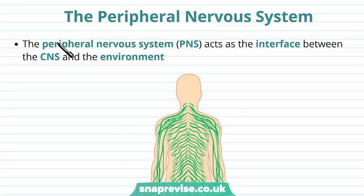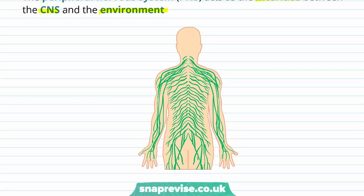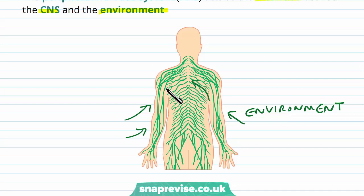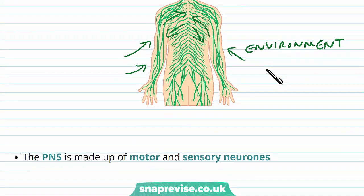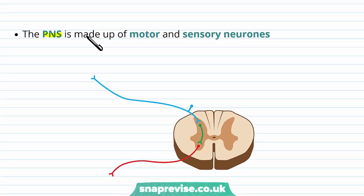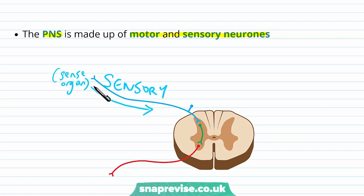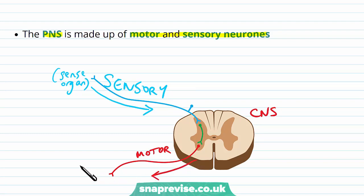The peripheral nervous system is slightly different. The PNS acts as the interface between the CNS and the environment. The CNS is in the centre, but the peripheral nervous system communicates things from the environment towards the CNS, and it also sends things out from the CNS to the places that interact with the environment. The PNS is made up of motor and sensory neurons. Sensory neurons take information from a sense organ or receptors towards the CNS, where it's then processed. Motor neurons take information away from the CNS to effectors.